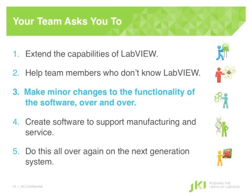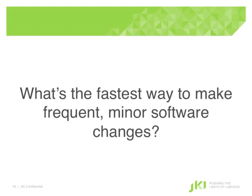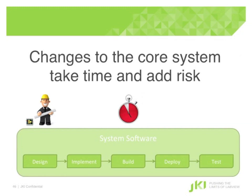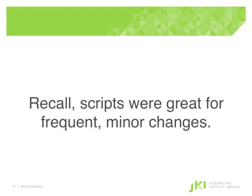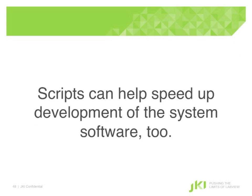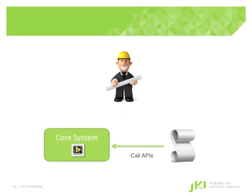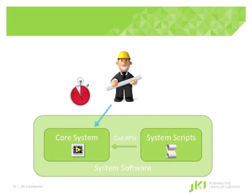Now let's look at how to save time when making minor changes to software functionality over and over. Changes to core system software take longer because it must be very stable and well-tested at all times. Scripts work great for allowing team members to make their frequent minor changes. Scripts can also help you speed up development of the system software. By allowing some scripting inside what is considered the system software, you have a choice: make changes to the core system — slower, needs to be reliable and tested on all systems — or make those changes to system scripts, which is much faster and has less risk.